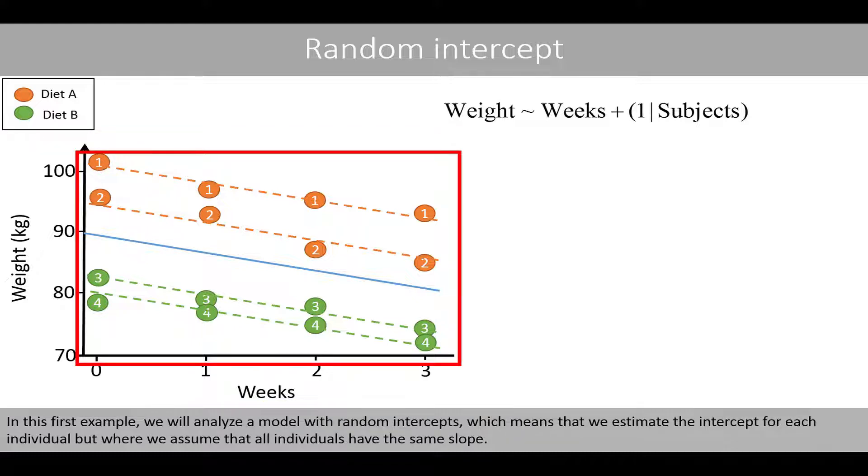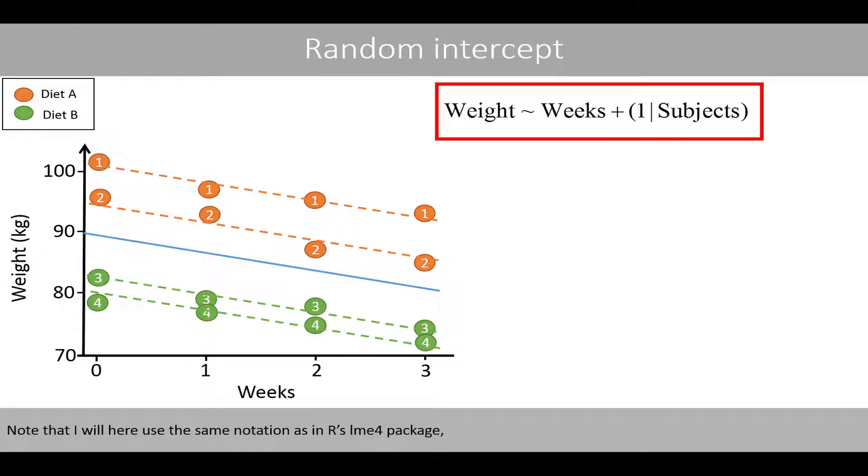In this first example, we will analyze a model with random intercepts, which means that we estimate the intercept for each individual, but where we assume that all individuals have the same slope. Note that I will here use the same notations as in R's lme4 package, where we place the fixed effects here, and the random effects here.